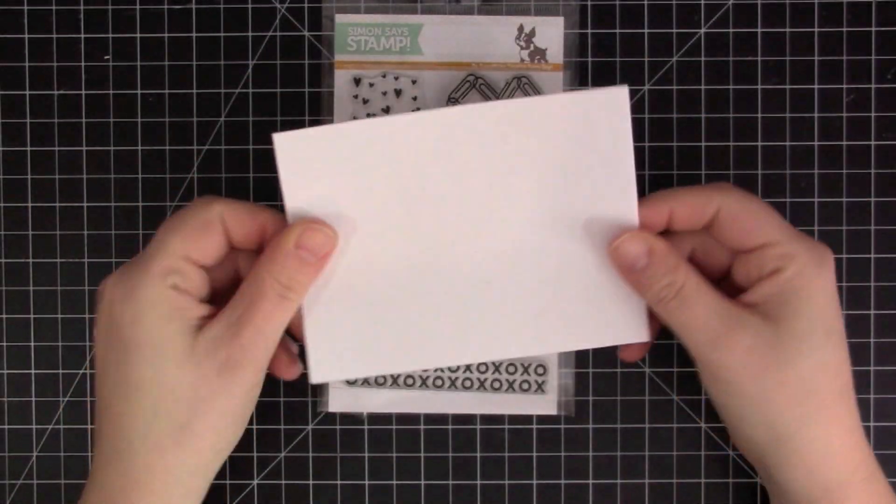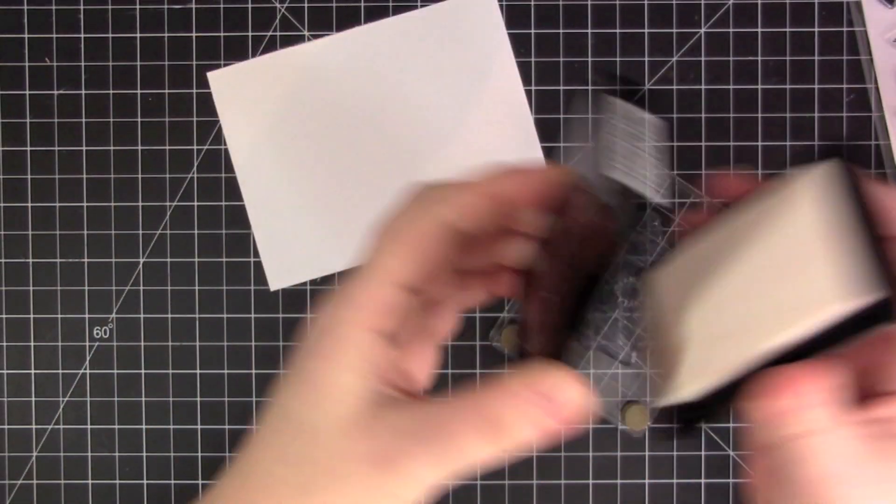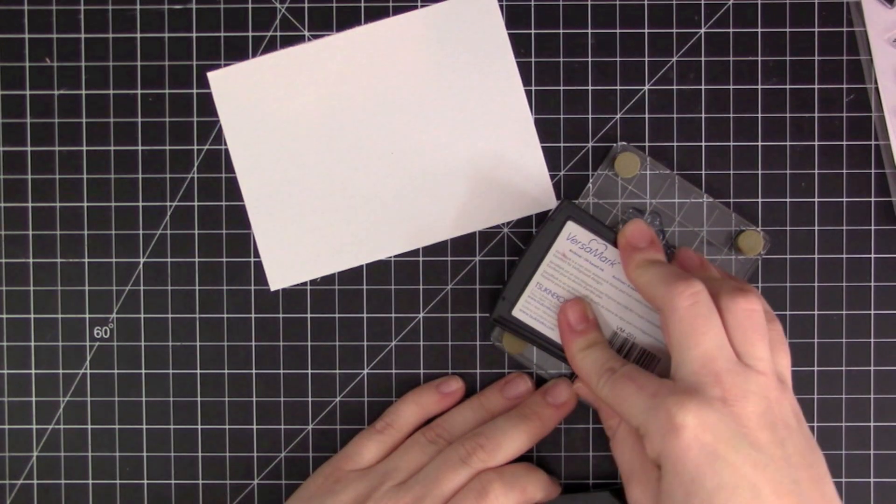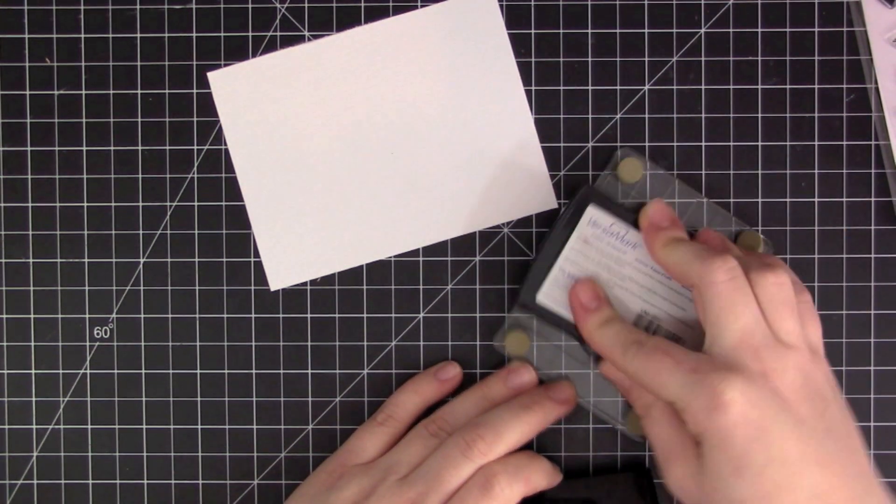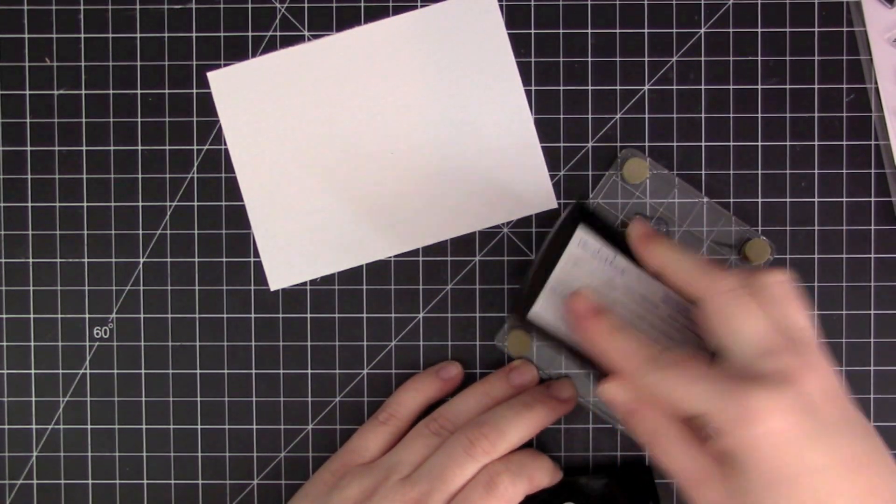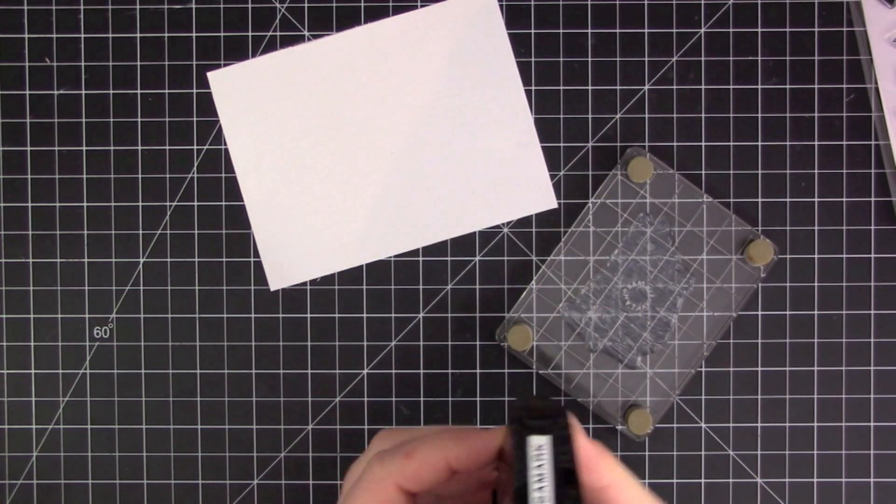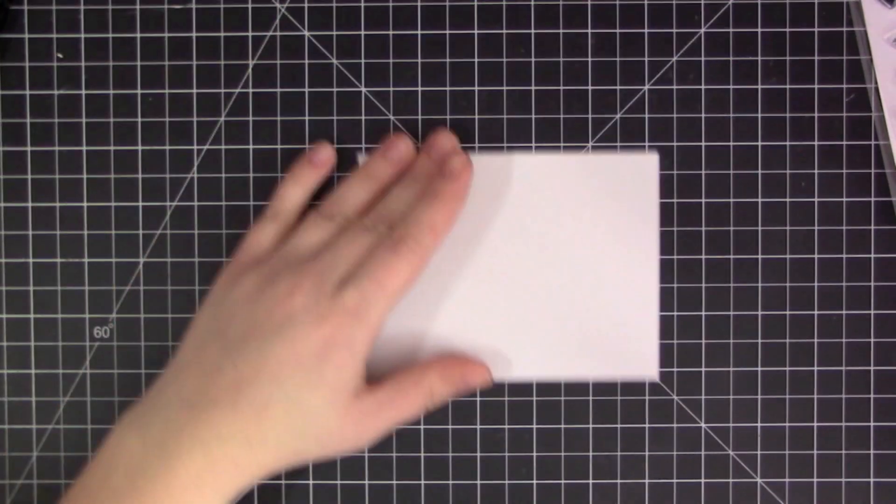I'm going to be using the large sentiment and a piece of sticky back canvas that comes in the kit. You get a full sheet of it, but I've cut mine down. I'm going to stamp this large 'will you be my Valentine' sentiment onto the center area of the sticky back canvas.